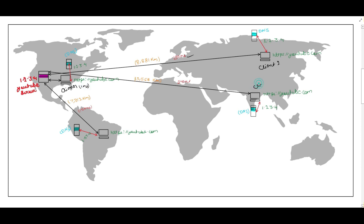Suppose client three is coming from India and querying youtube.com. The DNS server returns 1.2.3.4, then this client connects to the YouTube server and gets the video. For the India client it is taking 240 milliseconds — again a huge amount — because the distance between the United States and India is 13,568 km. The traffic travels over optical fiber cables with many switches and routers deployed to route traffic, which all takes time.